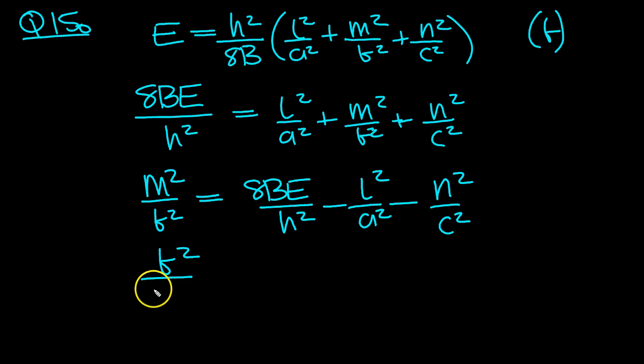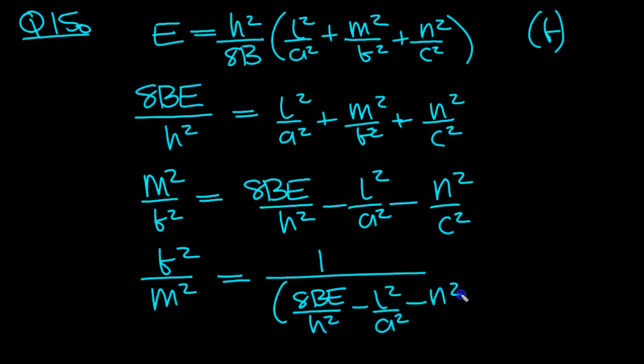So let's just turn this fraction upside down, and that will be this fraction inverted, which would be 1 over this fraction. So we'll get B squared over M squared equals 1 over bracket 8BE over H squared minus L squared over A squared minus N squared over C squared, close the bracket. Now it's just a matter of moving the M up.